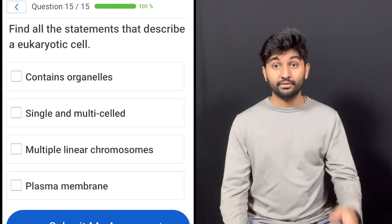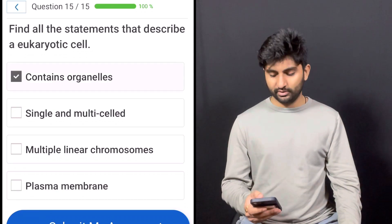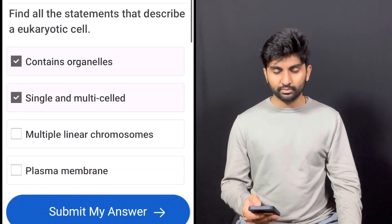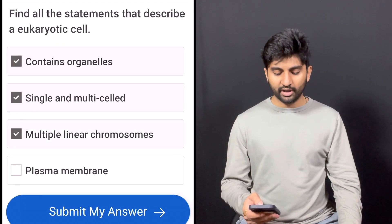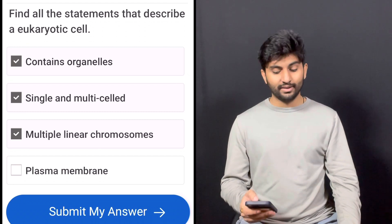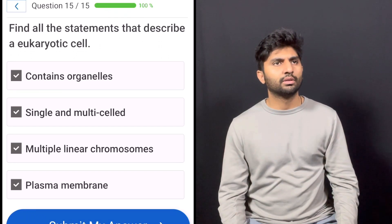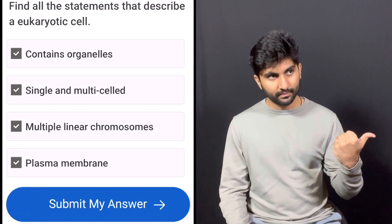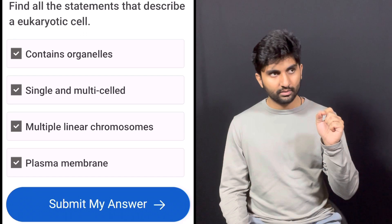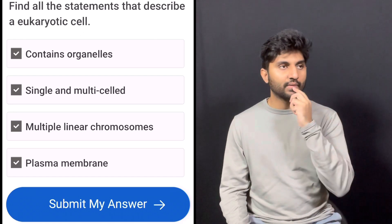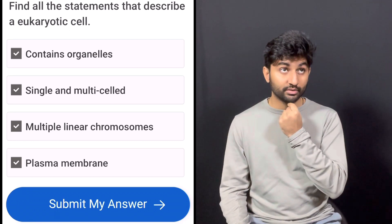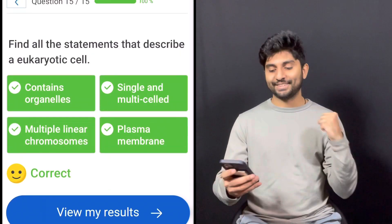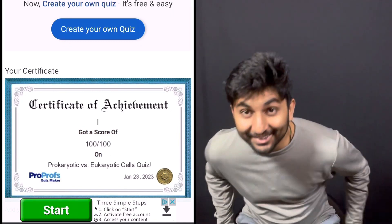Another find-all-the-correct-statements. Question 15. Find all the statements that describe a eukaryotic cell. Contains organelles—yes. Single and multi-celled—yeah. Multiple linear chromosomes—yeah. And a plasma membrane—yeah. Wait, they have linear chromosomes? Do they have linear chromosomes? They run parallel to each other, but they have the centromere or the centriole that pins them in the middle. So they're linear? It's chromosomes, I'll say linear. Well, I'm just going to say all four of them. That's correct. 100% quiz. Wow. Let's go. It's been a long time. Nick said it, and we did it.